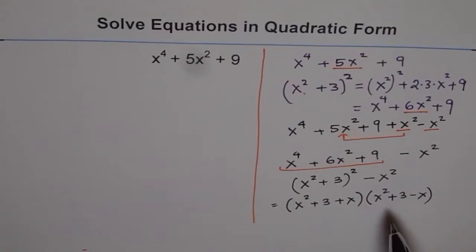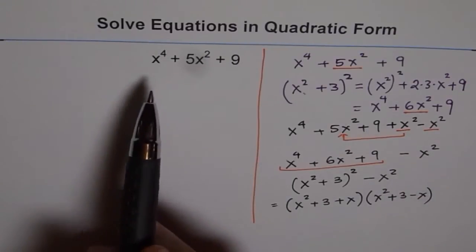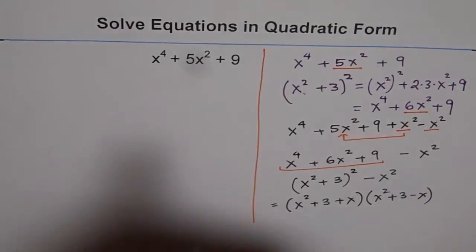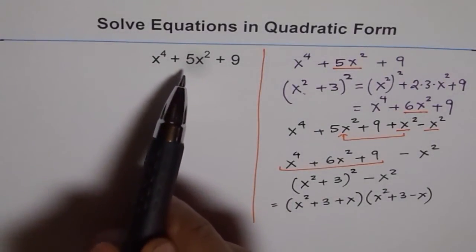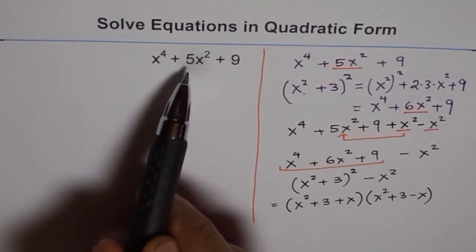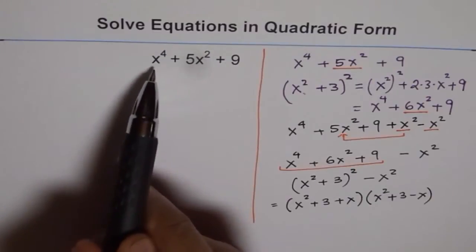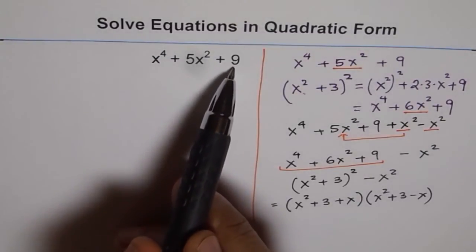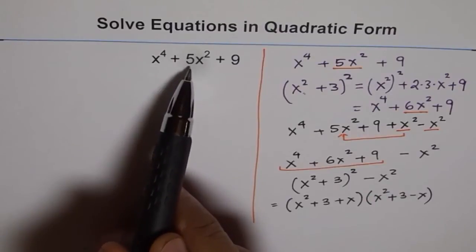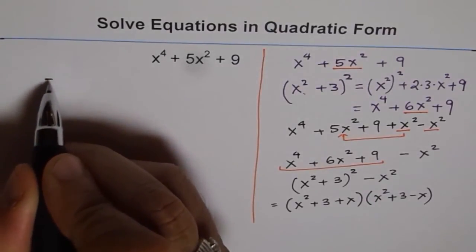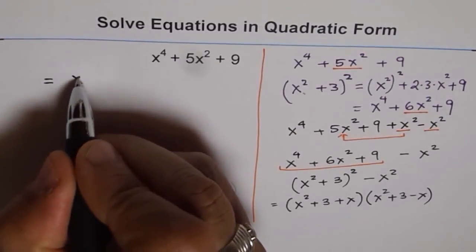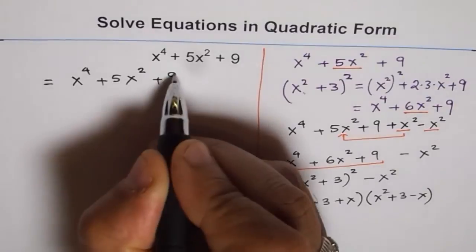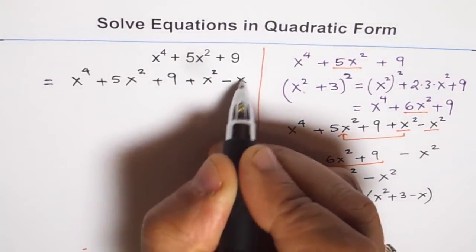Let me start all over again and show you this technique once more. We have x to the power of 4 plus 5x squared plus 9. We need to make it a perfect square. This could be a perfect square if the center term were twice the product of a and c — those two terms. 2 times 3 gives us 6. So we need 6 here to make it a perfect square, but we have only 5. So let's add one extra x squared. We add x squared and take away x squared.